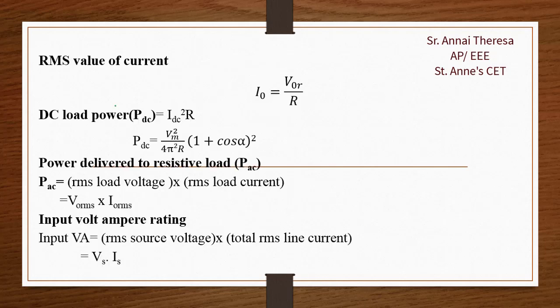The RMS value of the load current is I0_RMS = V0_RMS / R.